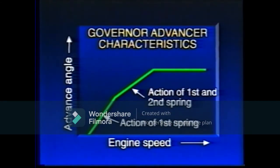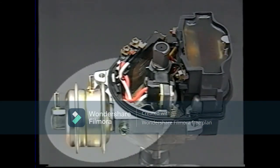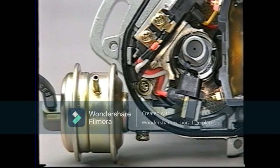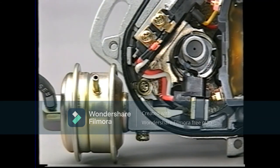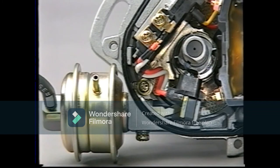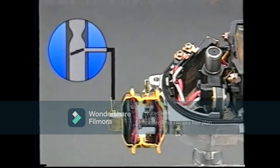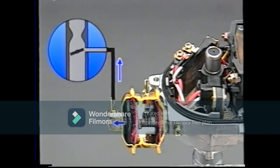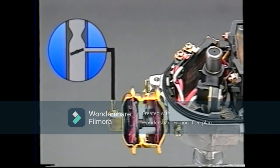This graph shows the relationship between the degree of advance angle and engine speed. Next, let's take a look at a vacuum advancer. A diaphragm is connected to the pickup coil with an advancer rod. This diaphragm responds to the vacuum in the intake manifold. When the load on the engine is light, the throttle valve opening is small, so a vacuum is generated at the diaphragm, pulling the advance rod, moving the pickup coil to the left, and advancing ignition timing.